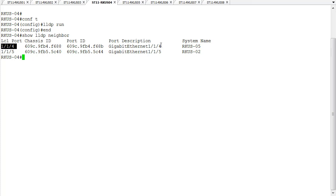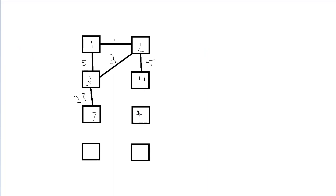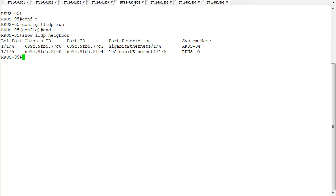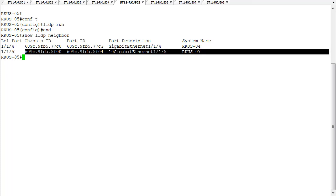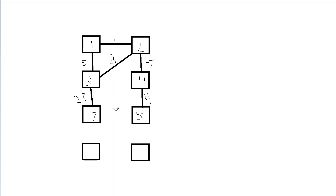Let's go into switch four. On switch four, we have port five connecting to switch two, which we already know about. We also have port four connecting to port four on switch five. So switch four connects to switch five on port four. Now we'll jump over to switch five. From switch five, we know about the link to switch four. We also have one on port five connecting to switch seven. So switch five to switch seven on port five.